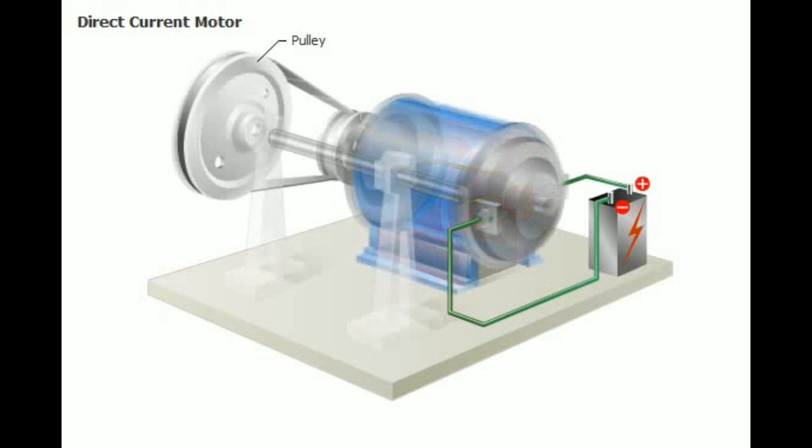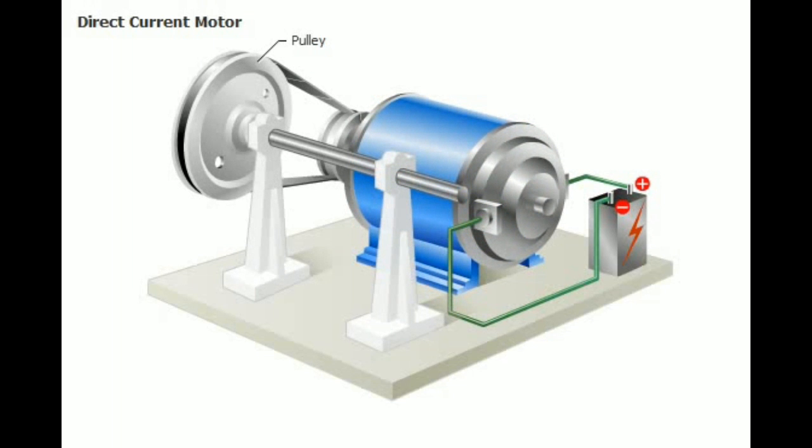Devices attached to the rotating armature shaft, such as pulleys and gears, can be used to perform any number of useful tasks.